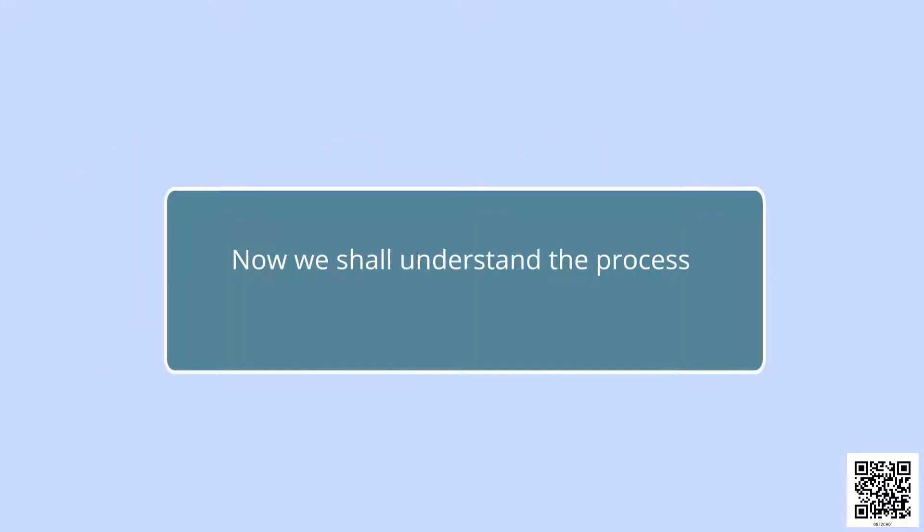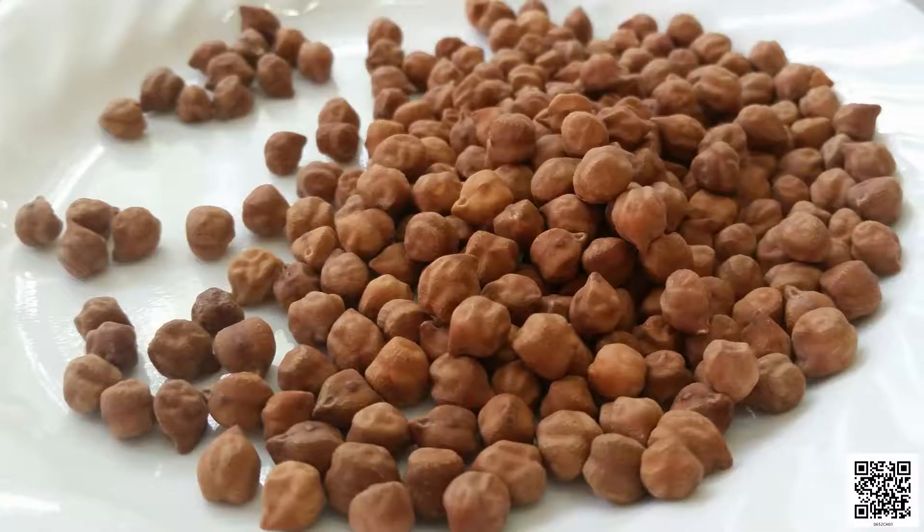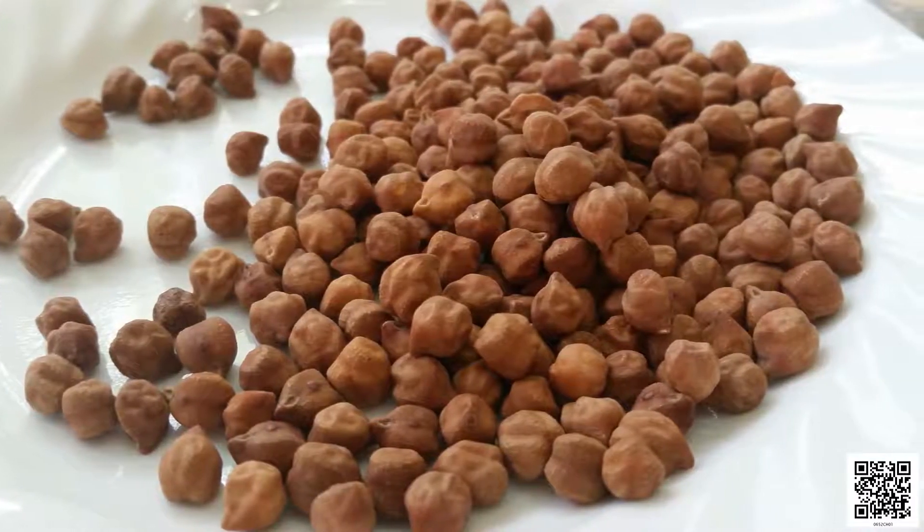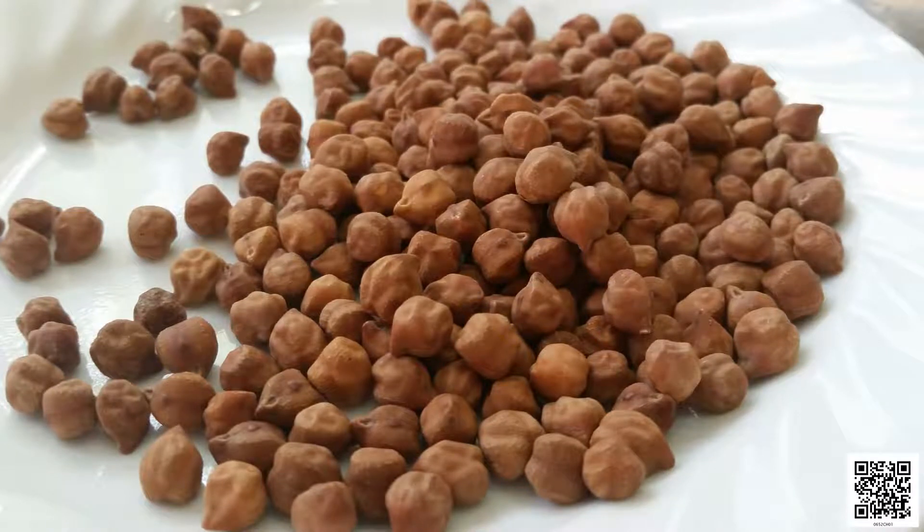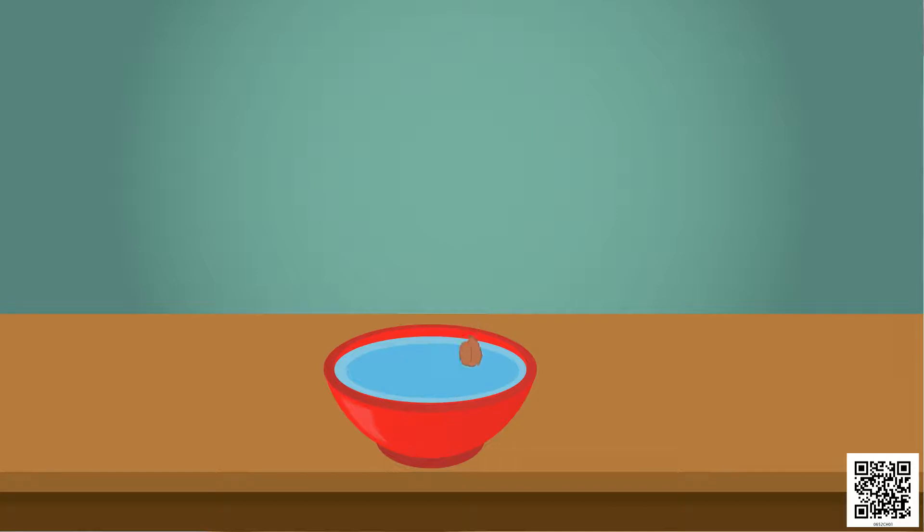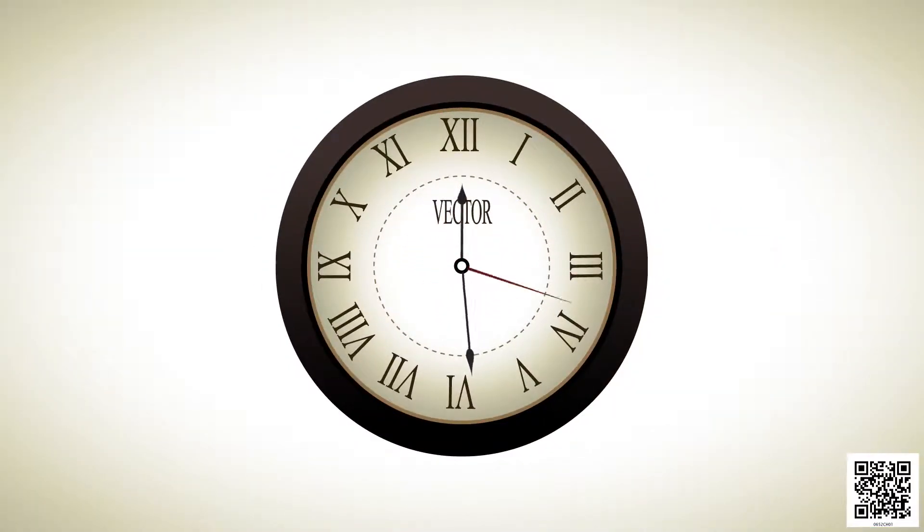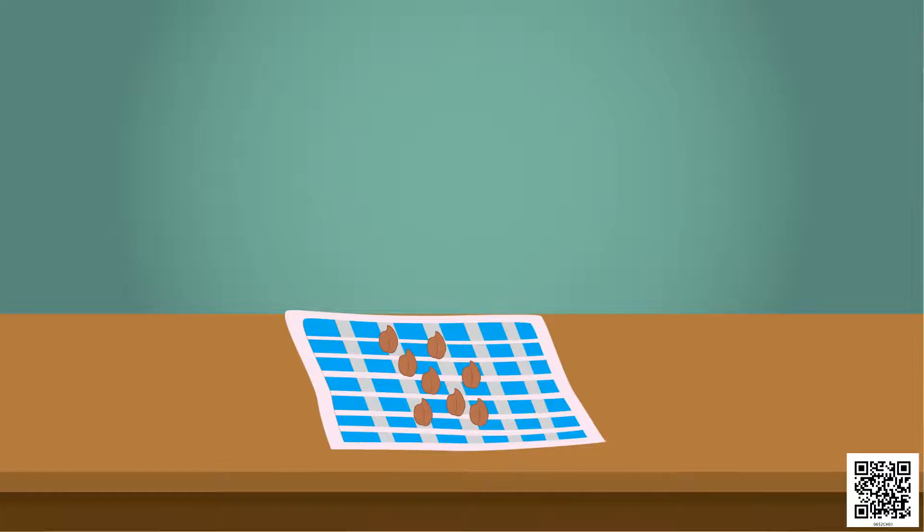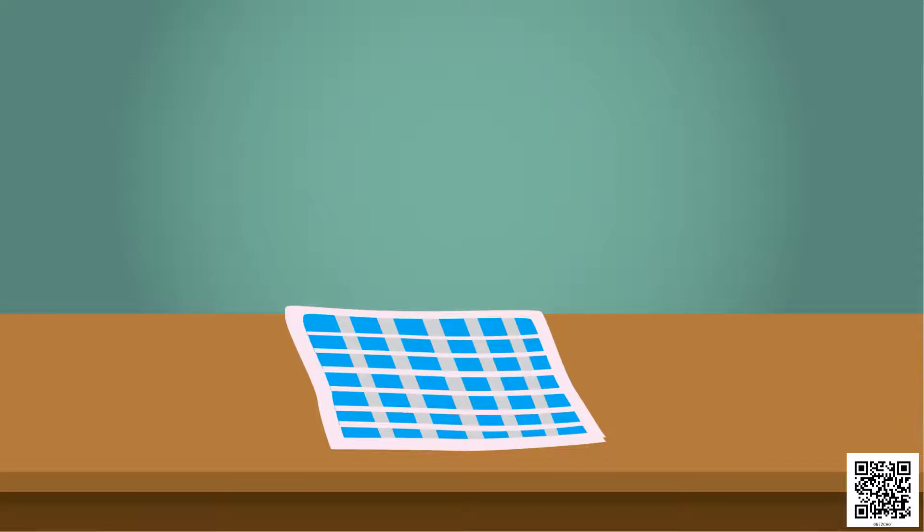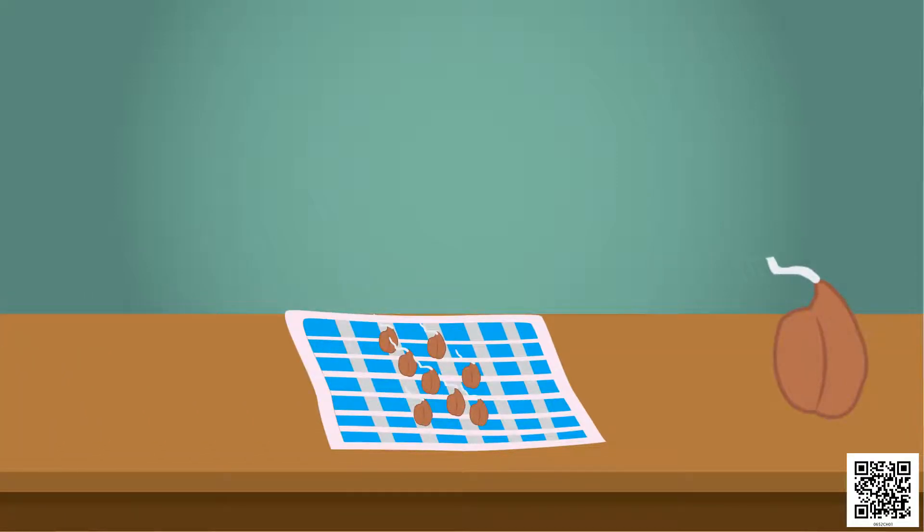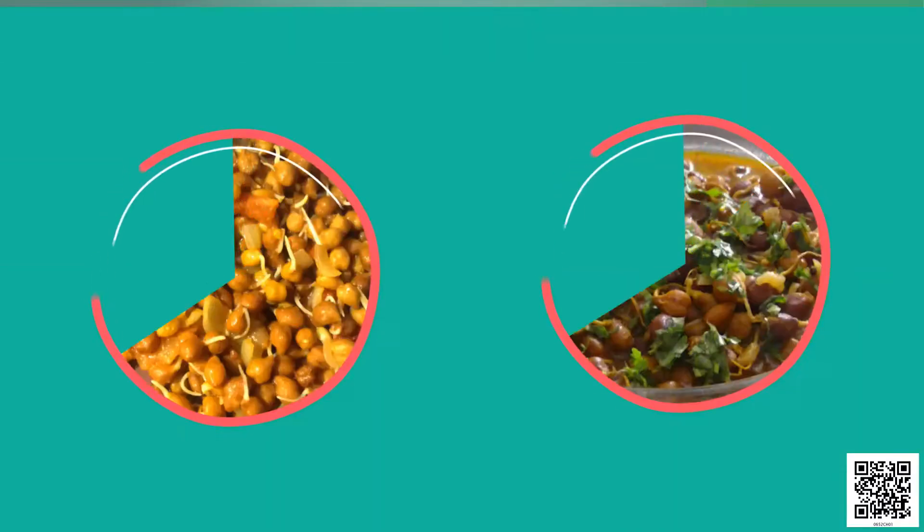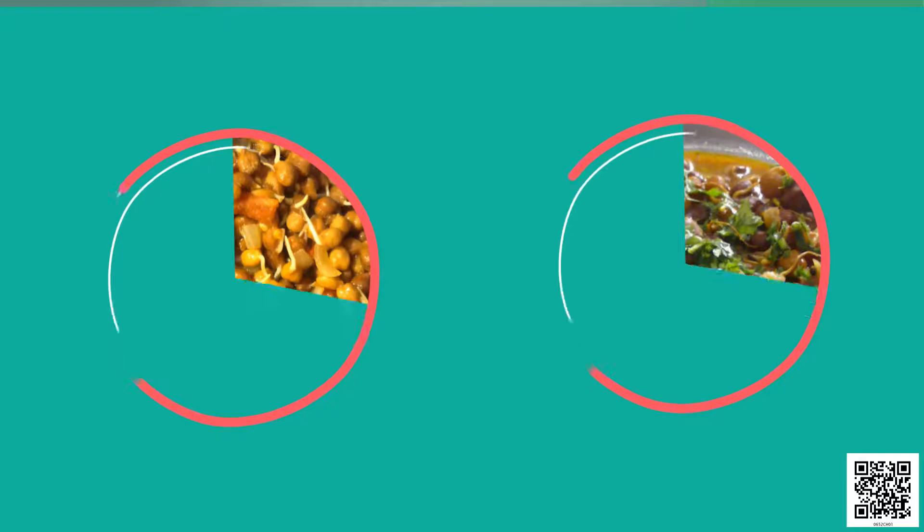Now we shall understand the process of seed germination—how seeds germinate and how a new plant is born. First of all, take some gram seeds. Put them in a water-filled container. Leave them for a day. Next day, remove water and cover the seeds with a damp cloth. In the very next day, we will see small white colored structures have grown out of these seeds. This means our seeds have sprouted. We can boil these sprouted seeds, and if we add some spices, we get tasty snacks to eat.